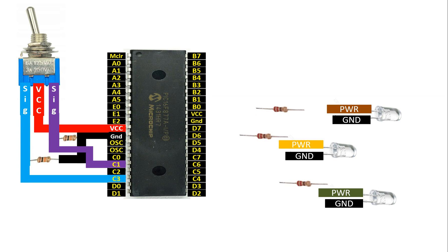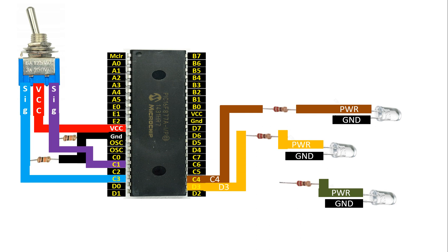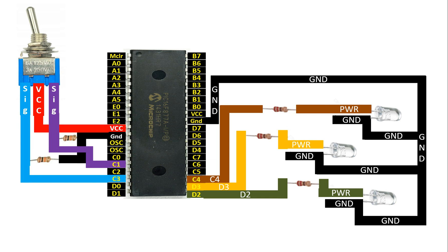Connect the longer pin of each LED to one end of the 220 ohm resistor. I am going to use pin C4 for the top LED, D3 (pin 22) for the center LED, and D2 (pin 21) for the bottom LED. Common the shorter pins of all LEDs and send them to common ground. Our connections are completed. We will program the PIC so that whatever position the toggle switch is in, that corresponding LED turns on — demonstrating three separate tasks with a single toggle switch.